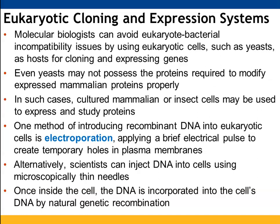It is definitely easier to work in cells that are more similar to the genes you want to express. One way to introduce recombinant DNA into eukaryotic cells is through electroporation — creating temporary holes that allow DNA to be taken inside the membrane. Alternatively, the DNA can be physically injected. After entry, recombination takes over and the DNA gets incorporated into the cell's genome.